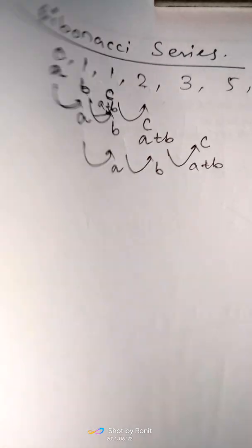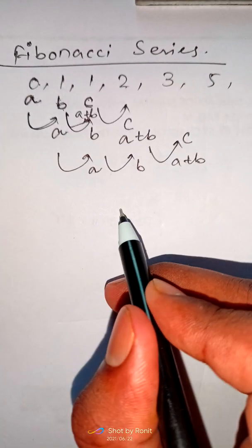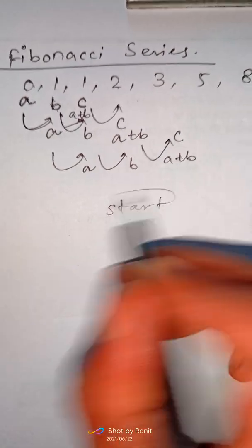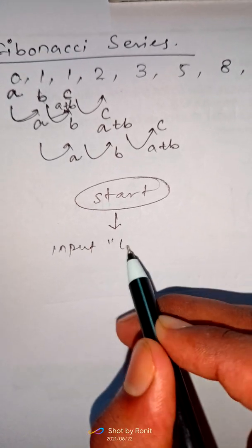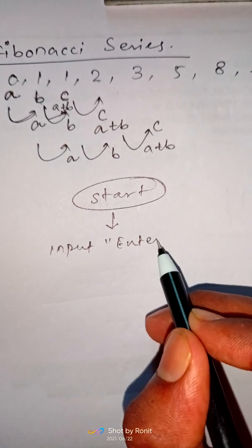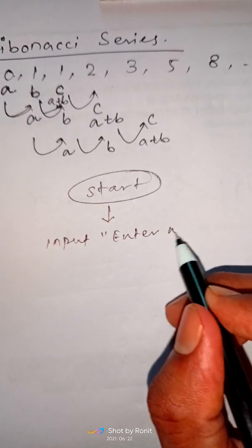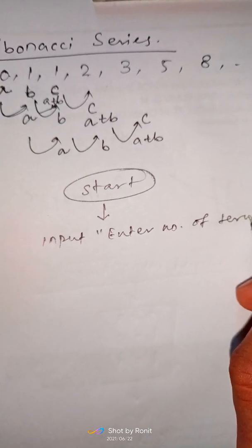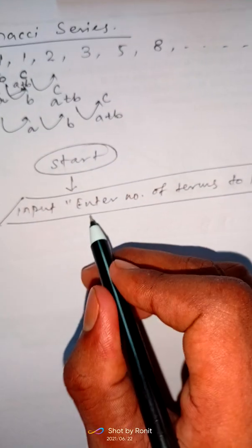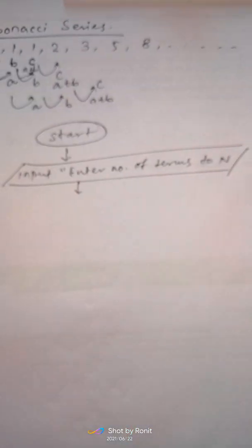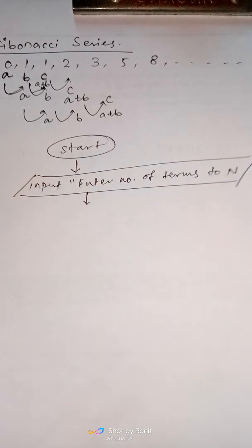Let's draw the flowchart for better understanding. First we start the process. We take input for how many terms we want to print — we store the number of terms in n.